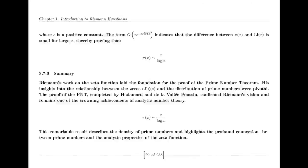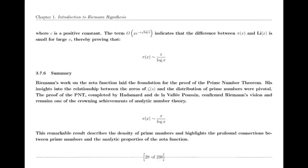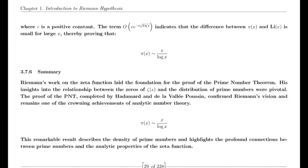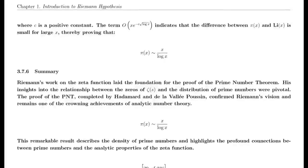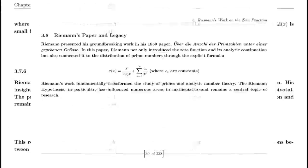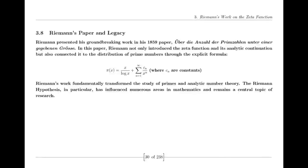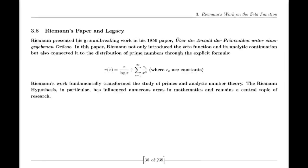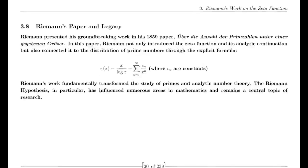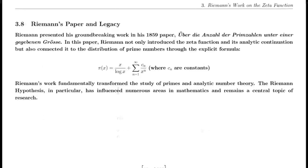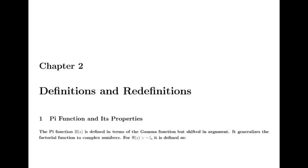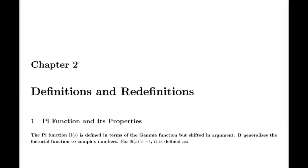This alignment is significant because it illustrates the relationship between geometric angles and the behavior of complex functions, especially in relation to the distribution of zeros. The π/3 or π/6 angles serve as a bridge between the geometric representation of the unit circle and the analytical properties of the Riemann zeta function, emphasizing how fundamental concepts in geometry and trigonometry intersect with deeper questions in number theory and complex analysis.